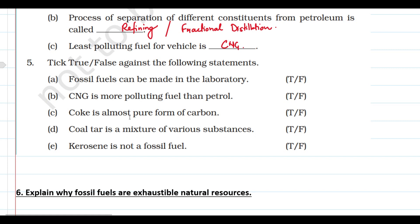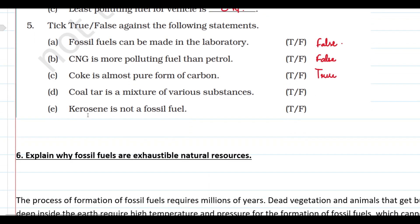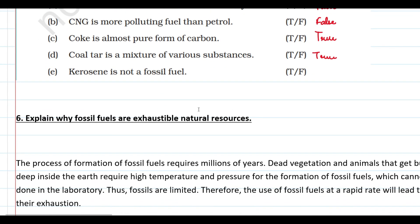True or False: Fossil fuels can be made in the laboratory — False, because if it were that easy, fossil fuels would not be so expensive. CNG is more polluting fuel than petrol — False, CNG is a much cleaner fuel and obviously creates less pollution. Coke is almost pure form of carbon — True, that is the property of coke. Coal tar is a mixture of various substances — True, coal tar contains around 200 plus substances. Kerosene is not a fossil fuel — False, because kerosene is obtained from petroleum, which is a fossil fuel.